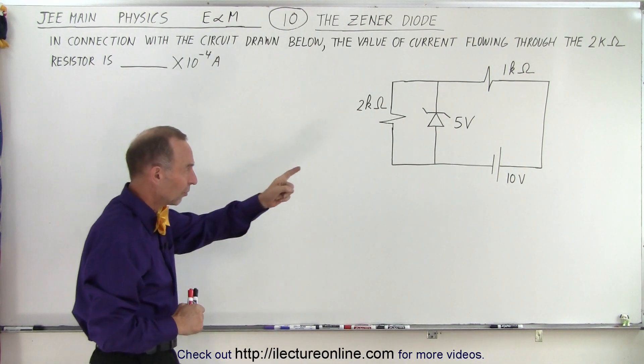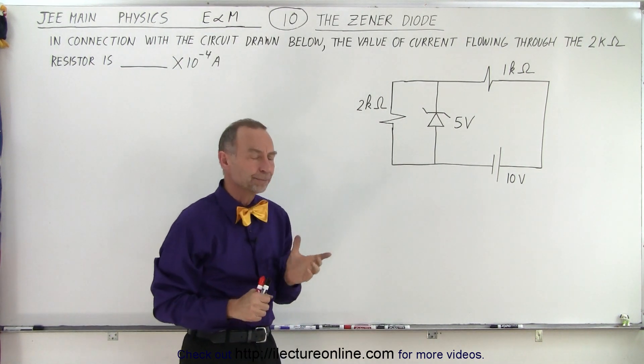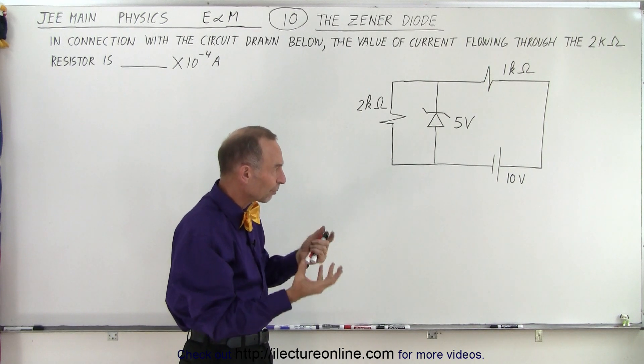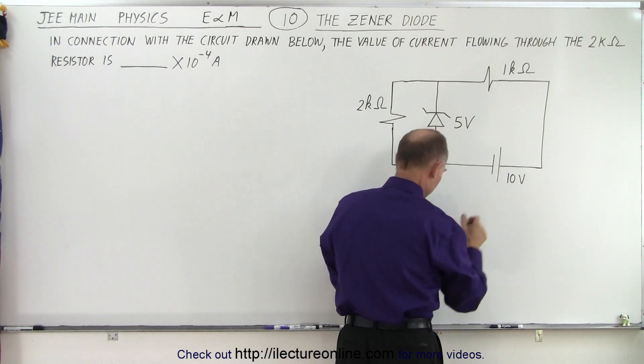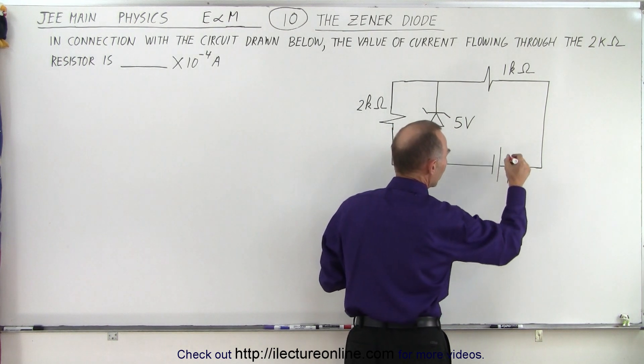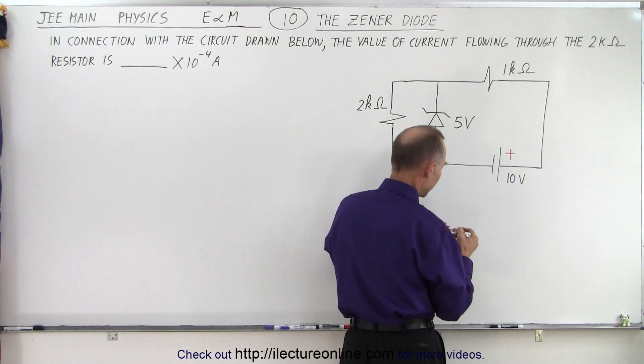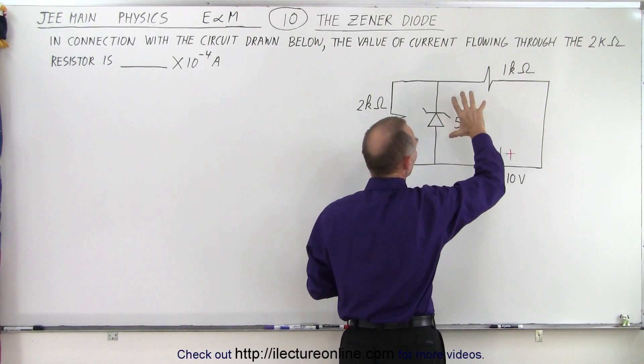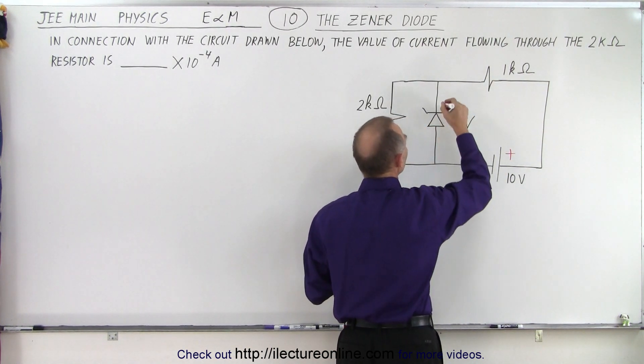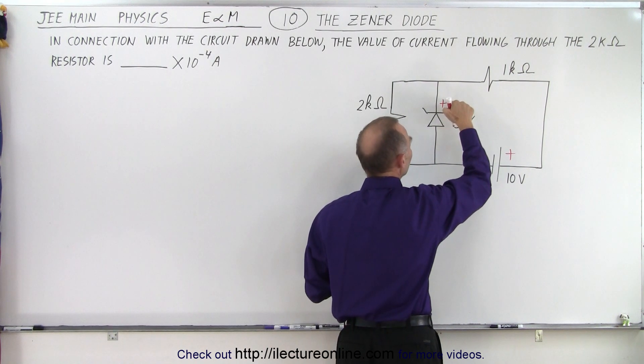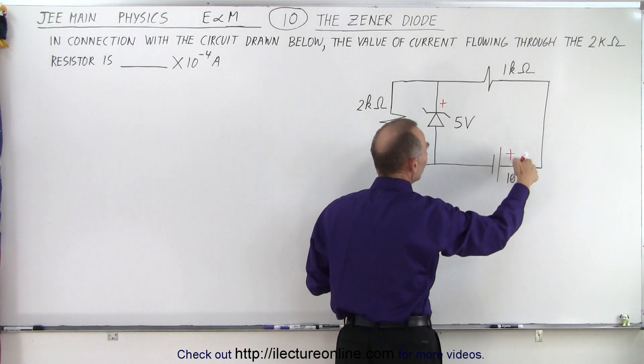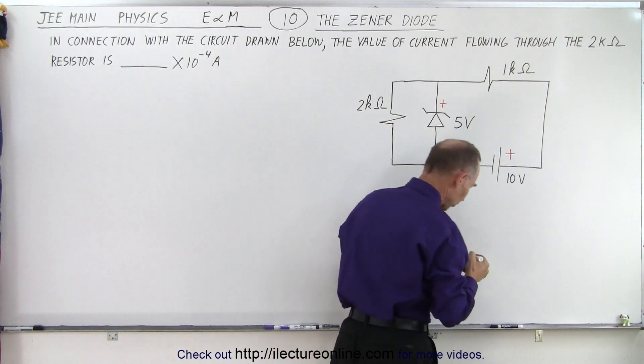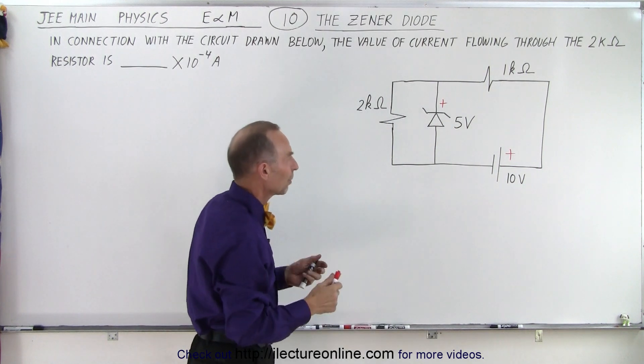So what's a Zener diode? When you place a Zener diode in a circuit, notice we have a battery or power supply—a voltage supply where the plus is on this side. As you connect it to the circuit right here, notice that the Zener diode will have the same positive side as where the voltage supply has its maximum or positive value.